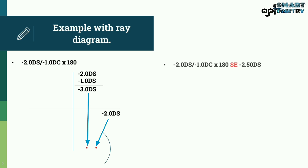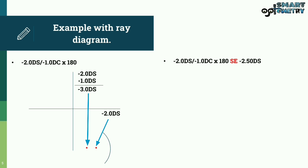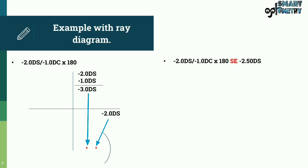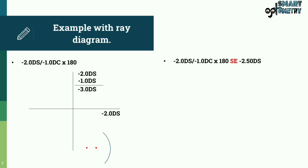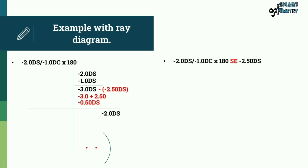The spherical equivalent for minus 2 diopter spherical with minus 1 cylinder at 180 degrees is minus 2.5 diopter spherical. Now, as we are giving minus 2.5 diopter spherical instead of the original prescription, let's see how much power remains in the vertical meridian. In the vertical meridian: minus 3 minus (minus 2.5) equals minus 0.5 diopter spherical remaining.